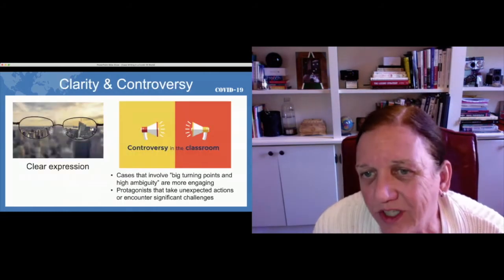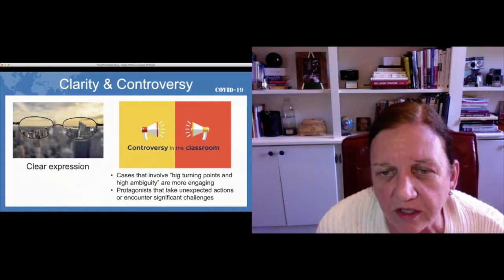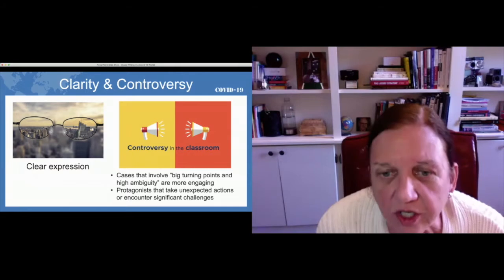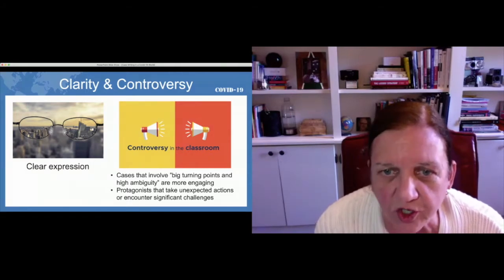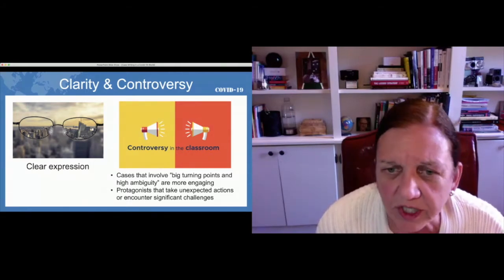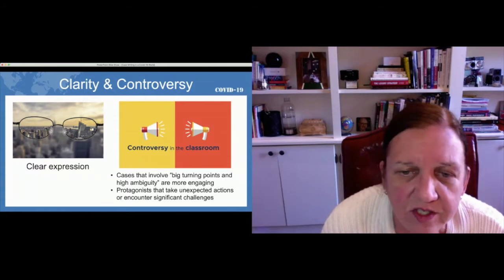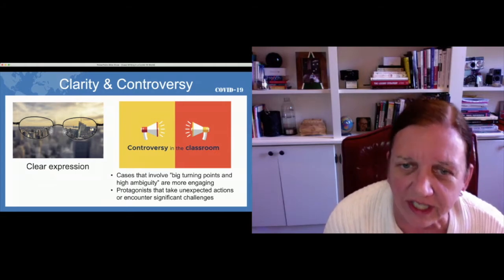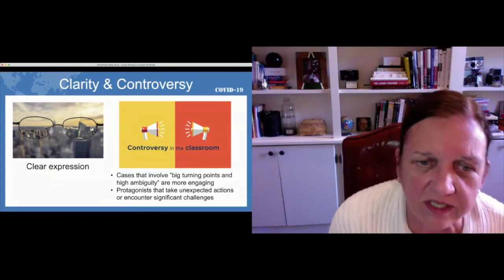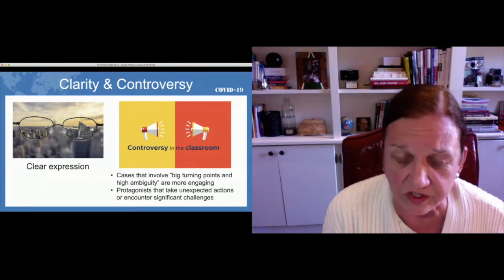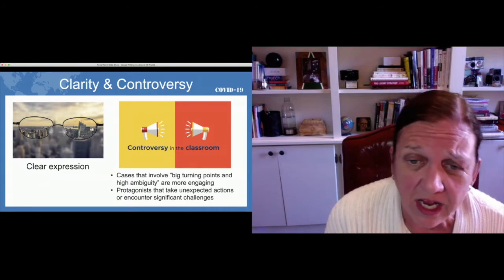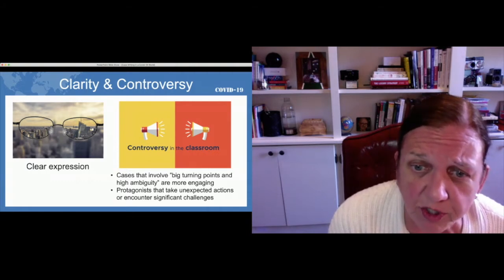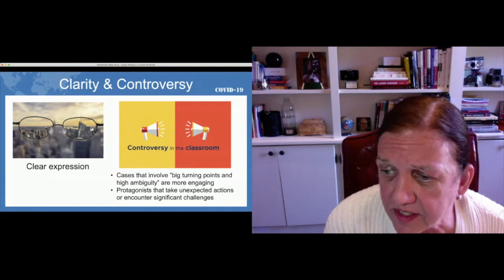The next two elements are clarity and controversy. If you're doing a case online — especially in an asynchronous environment where discussion is occurring whenever and not at the same time — there's really no opportunity to add clarification. So the case really has to be very clear in the way it's written. It has to avoid using jargon. Students who read a case and then have too many questions really don't get to the analysis, and there's just no opportunity to correct them in an online environment.